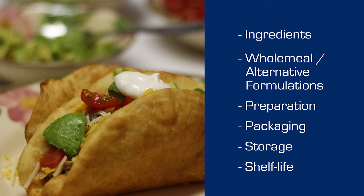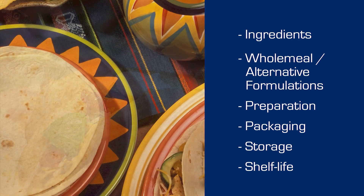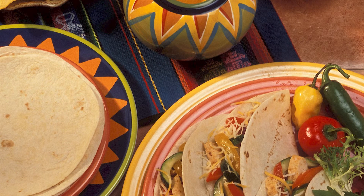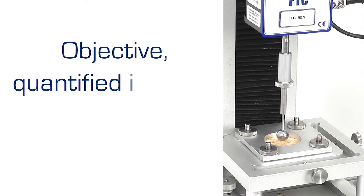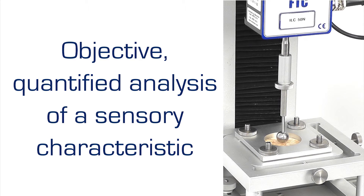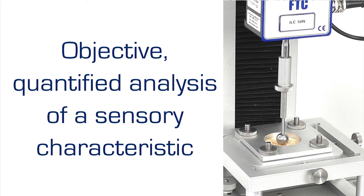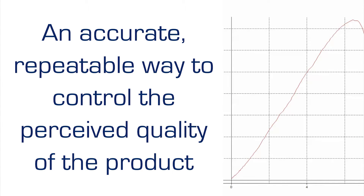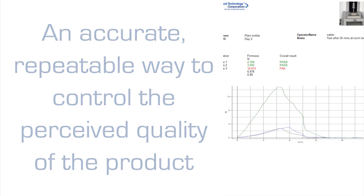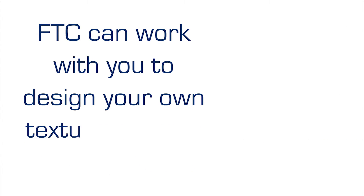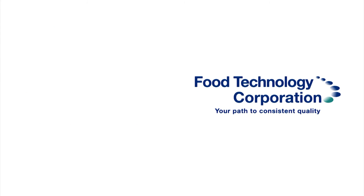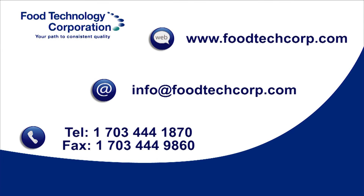This test method is suitable for any bakery product which needs both flexibility and resilience. A corn tortilla, which is expected to be crisp and brittle, can be tested by a bend or penetration method with a fixture suitable for a friable product. A texture analyzer enables objective, quantified evaluation of sensory characteristics for an accurate and repeatable way to control the perceived quality of the product. Food Technology Corporation can work with you to design fixtures and develop test methodologies to meet your own unique requirements and quality standards, to control tortilla softness, tear resistance, and ultimate burst strength.